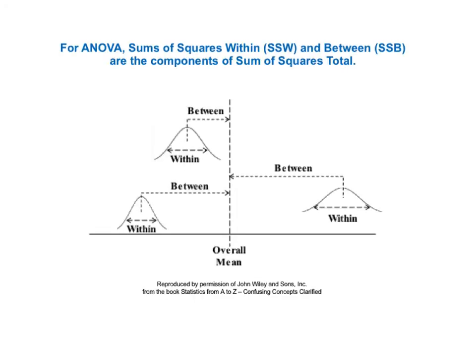This diagram illustrates conceptually the variation of SSW and SSB, which are the two components of SST for ANOVA. Each group has some variation within its set of data — that is called the sum of squares within — pictured here as the widths of the bell-shaped curves. The sum of squares between is the total of all the variations between the individual group means and the overall mean of all the data from all the groups. All of this is described in more detail in the ANOVA Part 2 article and video.